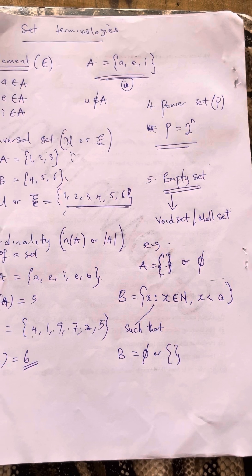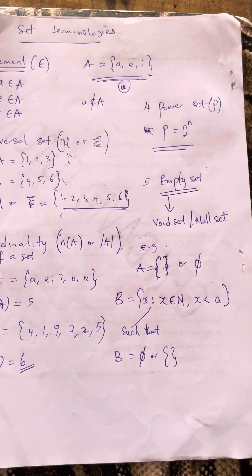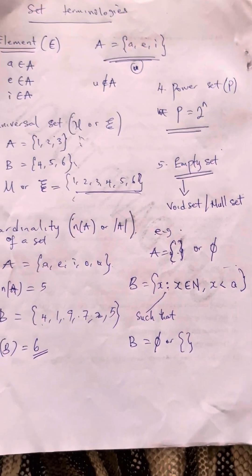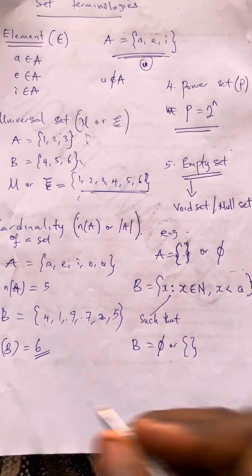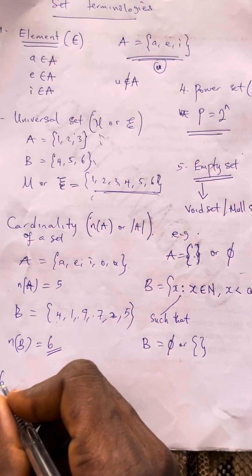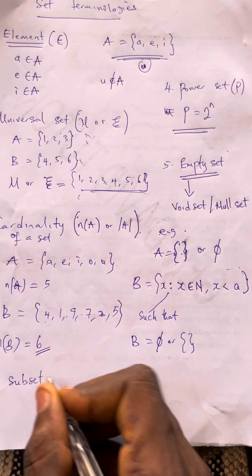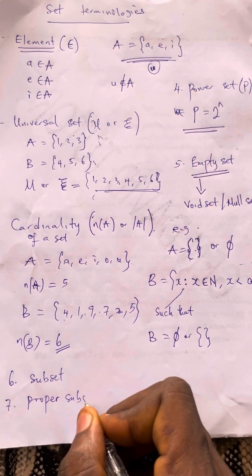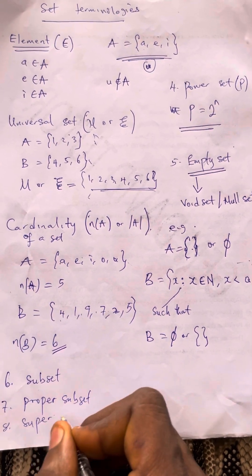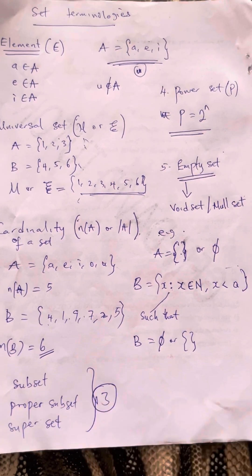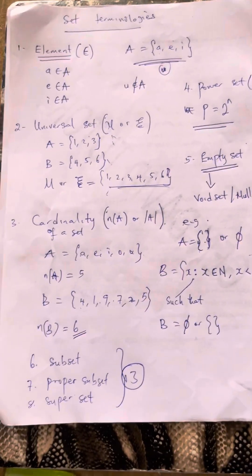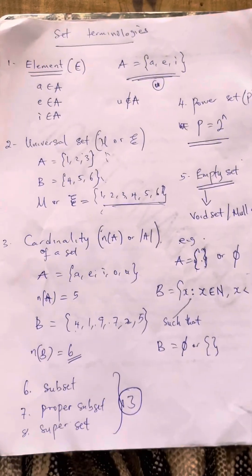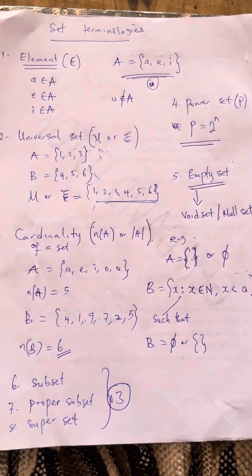Another terminology we have: I've already explained the proper subset, the subset, and the superset. So please visit our YouTube channel and search Gendevit Calculator to see the full explanation of subset (number six), proper subset (number seven), and superset (number eight).